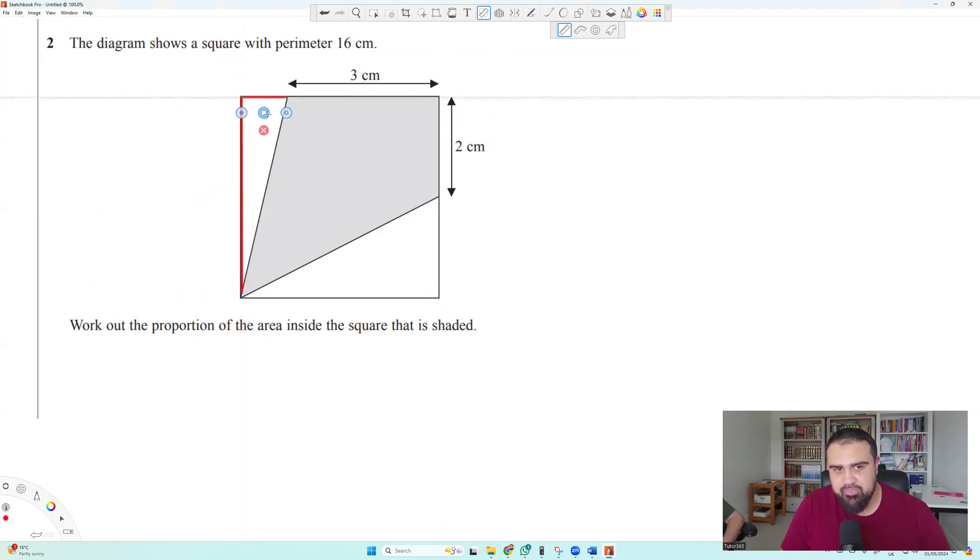So what I did is I worked out the area, because it's hard to do the area of the kite, right? So I worked out the area of both triangles. Well done. The area of the square, and took the triangle and the area of the shaded region.